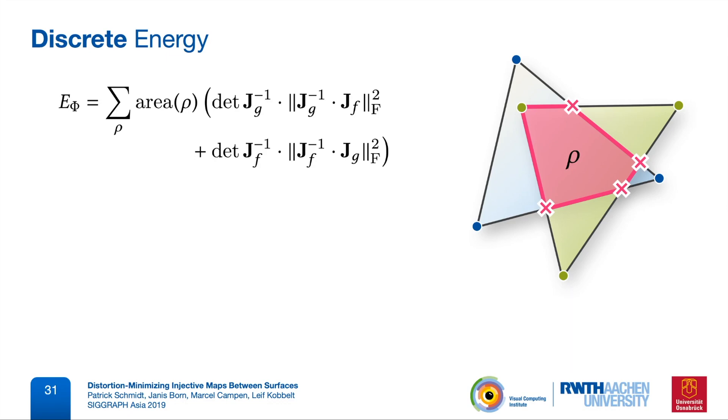And with that we already arrived at our discrete end-to-end distortion measure that we want to optimize. And this is not a discrete approximation of the continuous energy, but an exact realization in the case of triangle meshes.